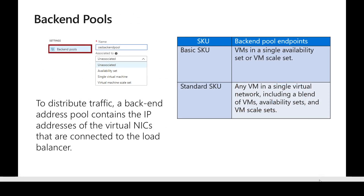The next thing is backend pools. We need to create a backend pool in the load balancer configuration and assign all the IP addresses, virtual machines, or other instances we want to attach. Whenever traffic comes through, it is shared across the different backend instances associated with the backend pool. With the Basic SKU, you can only add VMs from the same availability set or scale set, whereas with the Standard SKU you can add single instance VMs, VMs from another zone, another availability set, and so on.